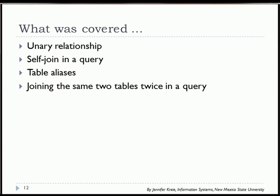In this video we looked at the unary relationship — a table related to itself — and how to use it in a query. This requires the use of table aliases, and the same thing applies when you use the same two tables twice, such as the evaluator and evaluatee relationship between the students and evaluations tables.